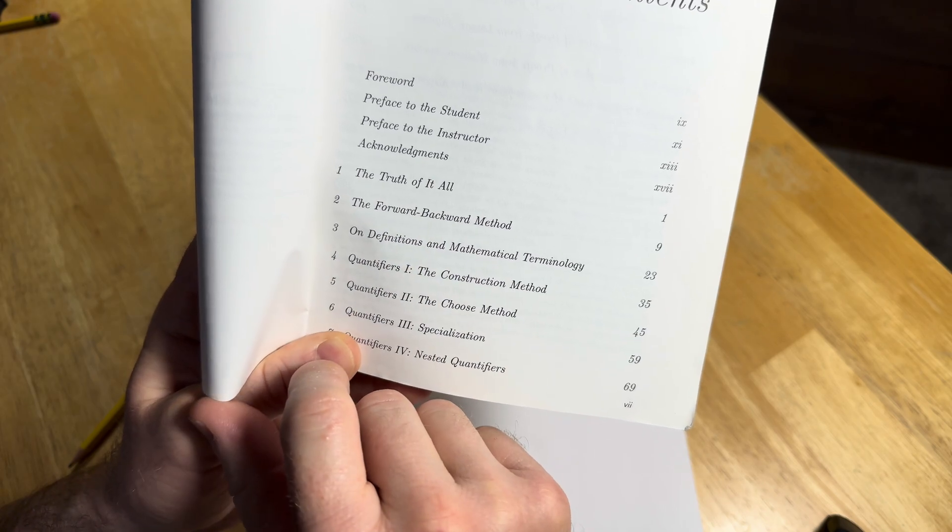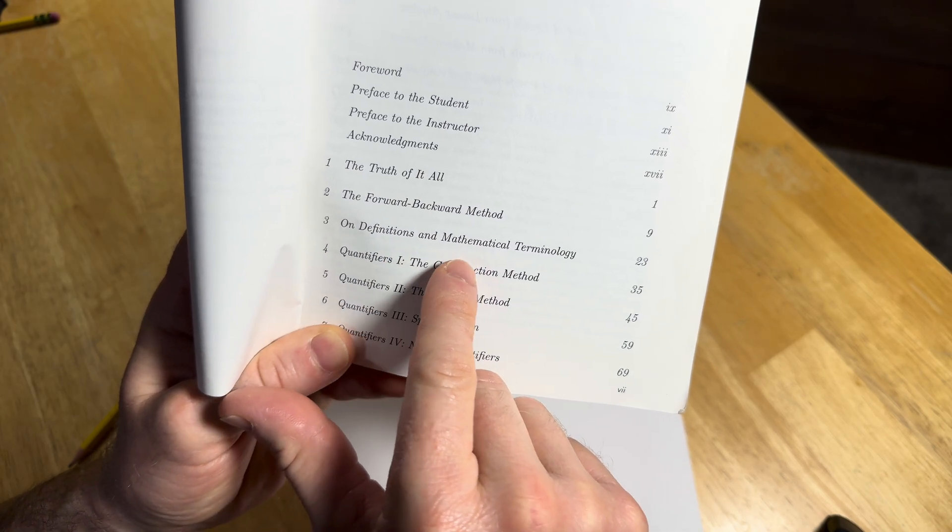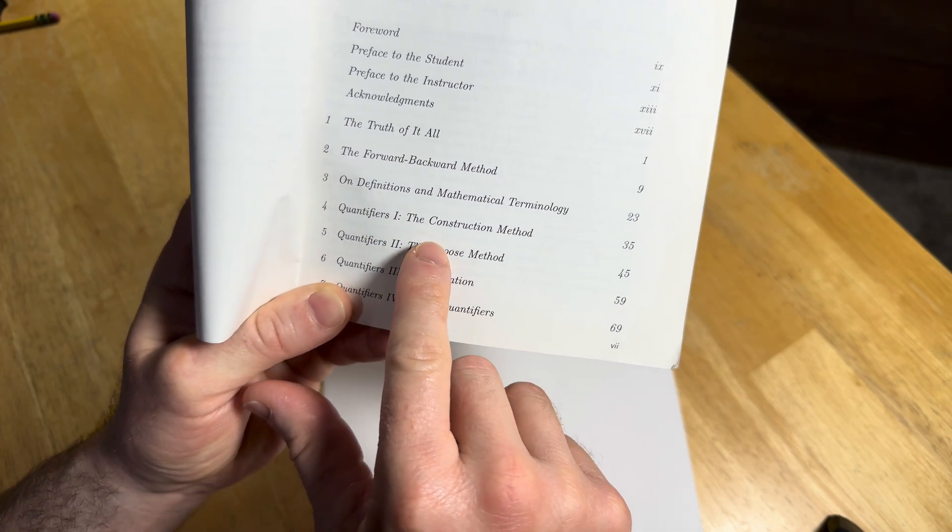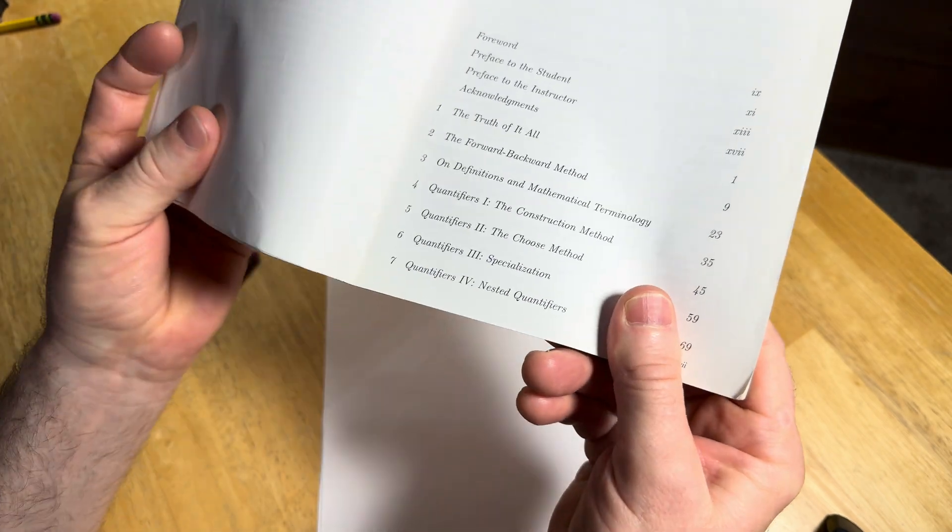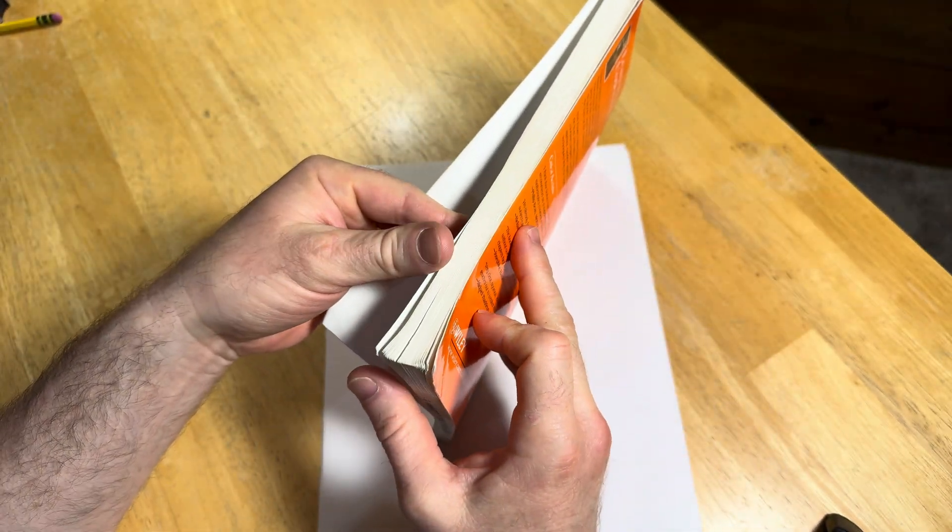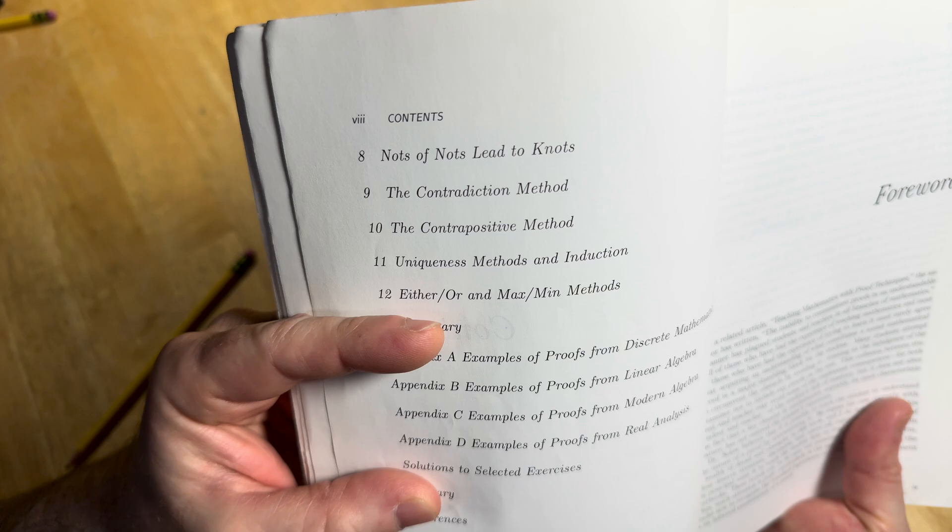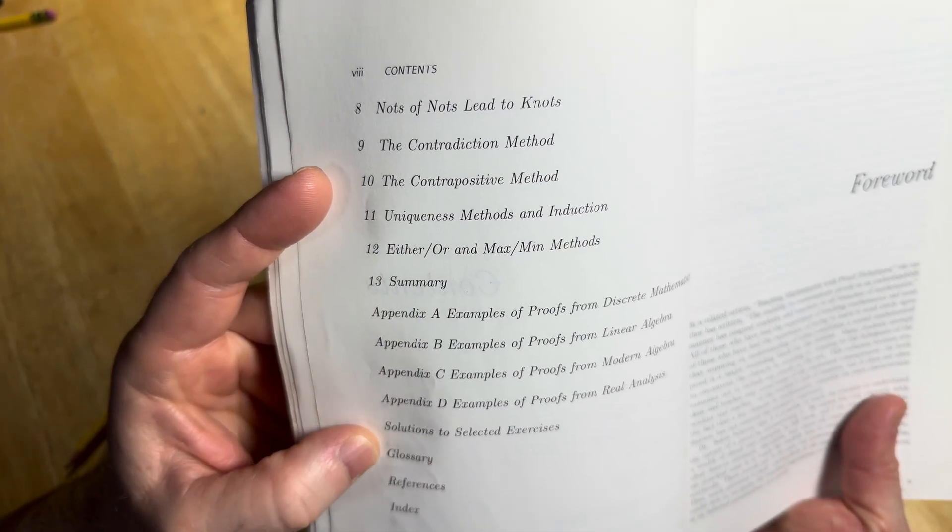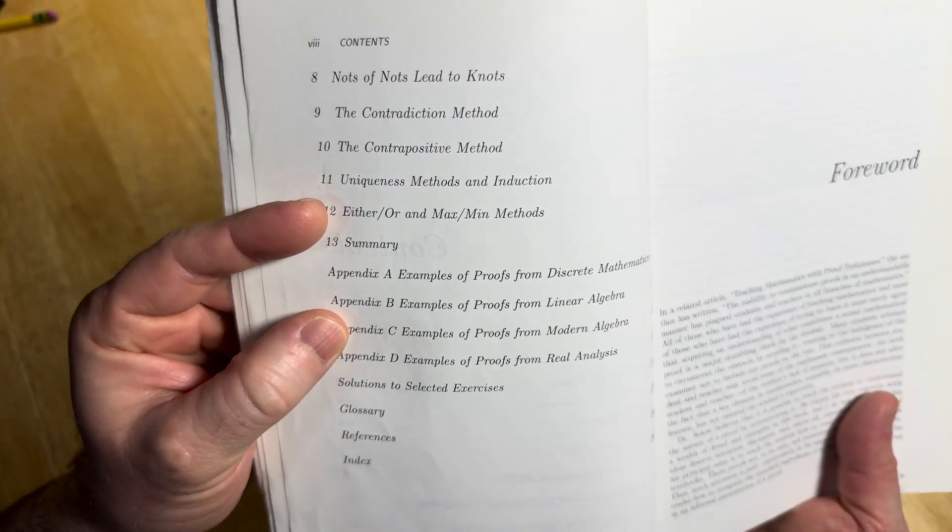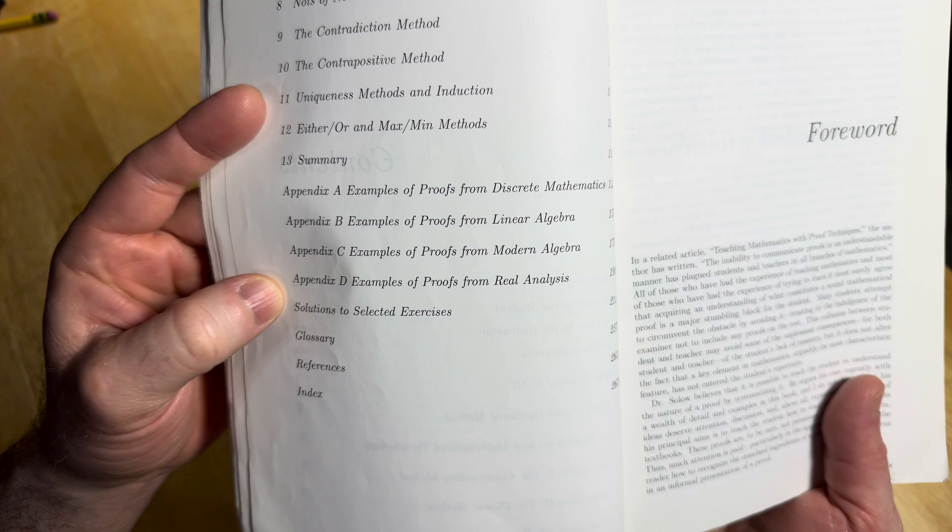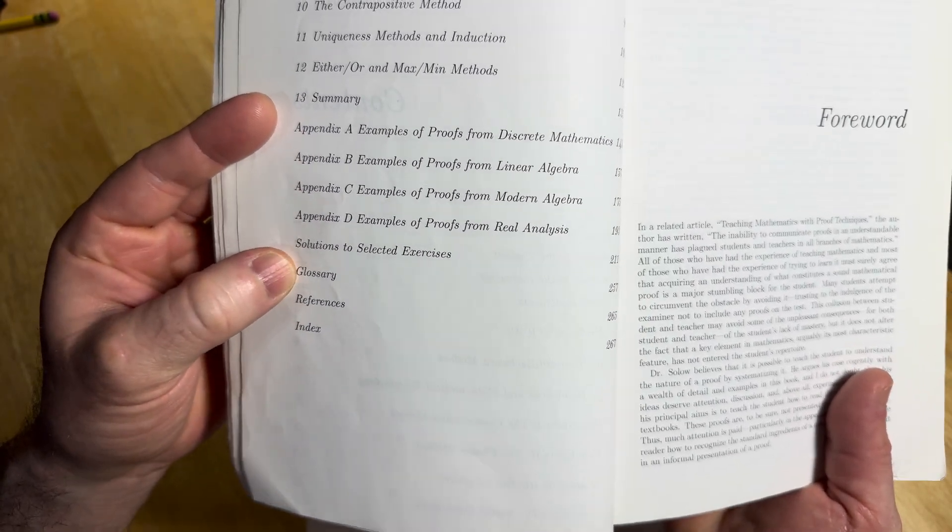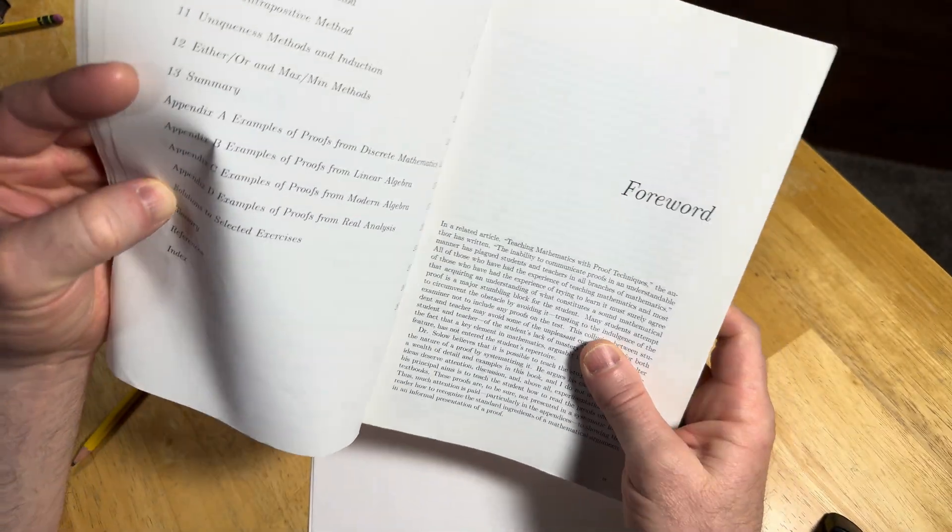The truth of it all, the forward backward method on definitions and mathematical terminology and then we have quantifiers here. Let's turn the page so we can see what else we have. Here you can see some other topics and you have some examples of proofs from discrete math, linear algebra, modern algebra, and real analysis. And you have some of the answers to some of the exercises.